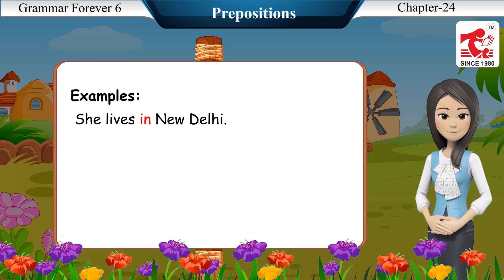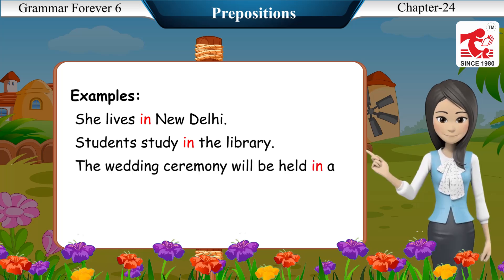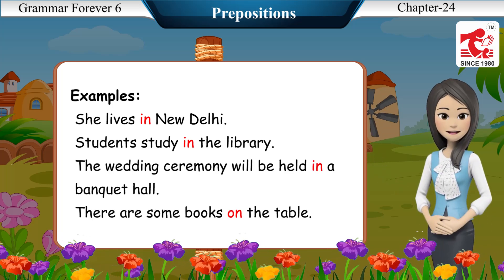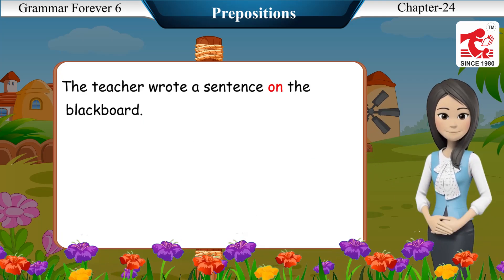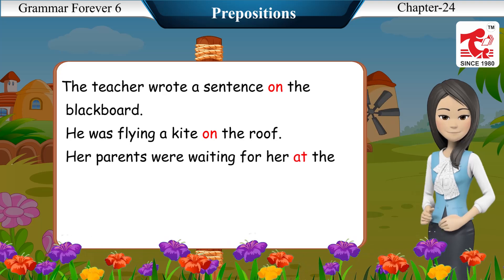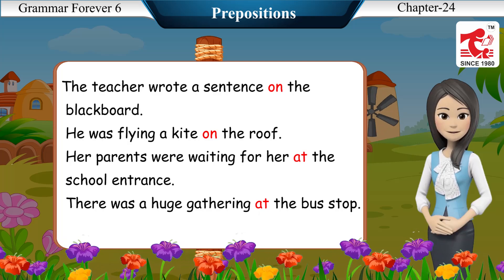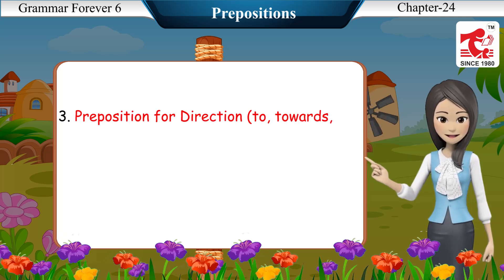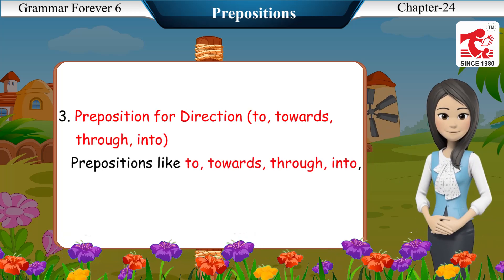Example sentences for place prepositions: She lives in New Delhi. Students study in the library. The wedding ceremony will be held in a banquet hall. There are some books on the table. The teacher wrote a sentence on the blackboard. He was flying a kite on the roof. Her parents were waiting for her at the school entrance. There was a huge gathering at the bus stop. His house is at the end of the street.